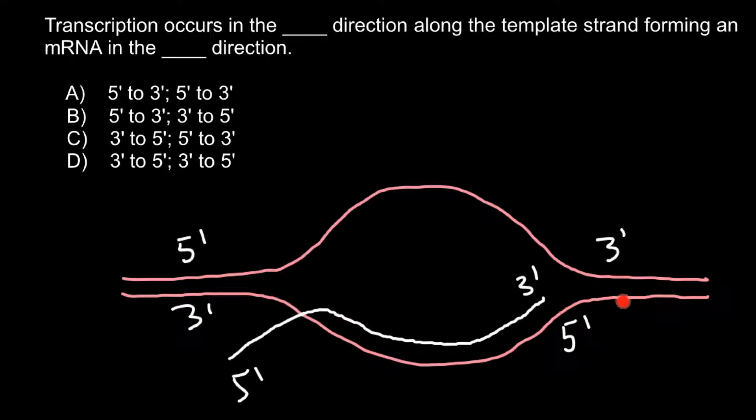forming a message RNA in the 5 prime to 3 prime direction. And as you see, this is going to be answer C. Just remember